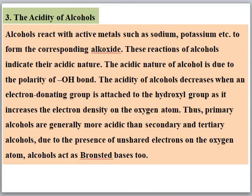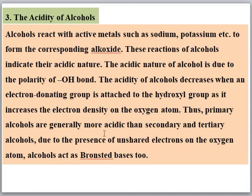The next physical property is the acidity of alcohols. Alcohols react with active metals such as sodium and potassium, and this reaction is due to the polarity of the O-H bond. This reaction produces compounds known as alkoxides. These reactions indicate the acidic nature of alcohols. The acidity of alcohols decreases when the alkyl group increases in size. Since alkyl groups are electron-donating in nature, they decrease the acidity of the alcohol. Primary alcohols have a single electron-donating group, while secondary and tertiary alcohols contain two or more. Thus, primary alcohols are generally more acidic than secondary and tertiary alcohols.